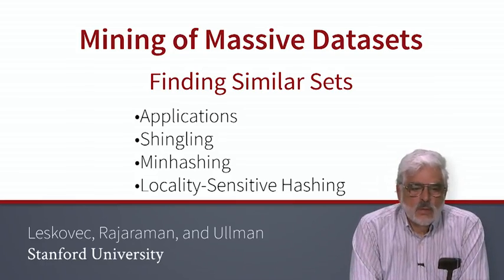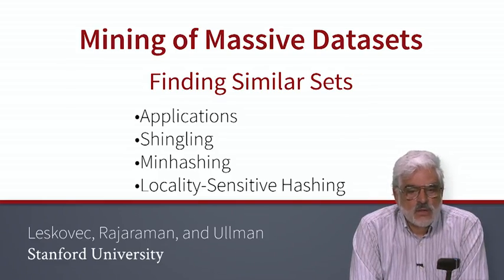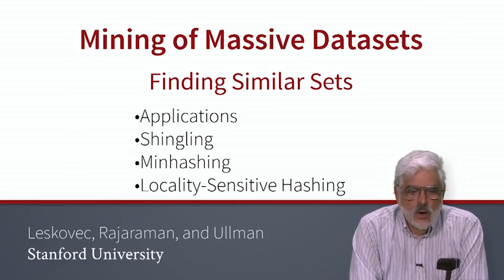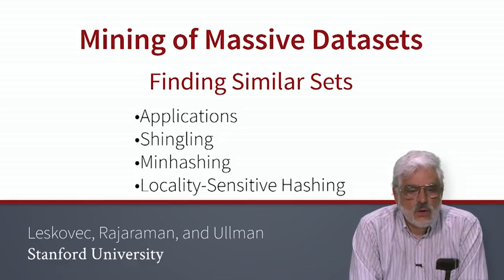We'll begin by looking at some applications where finding similar sets is very useful. We then are going to focus initially on finding similar documents, meaning that they have a substantial amount of text in common. For this problem, we first study shingling, which is a way to convert the informal notion of similar documents into a formal test for similarity of sets. Then we learn the remarkable technique called min hashing, which allows us to replace a large set by a much smaller list of values. The magic of min hashing is that the similarity of the small lists, called signatures, predicts the similarity of the whole sets.